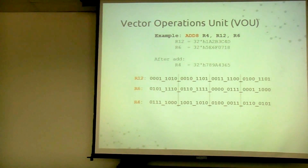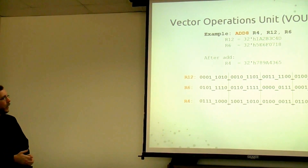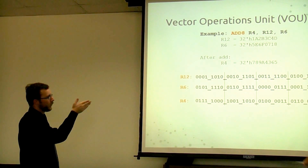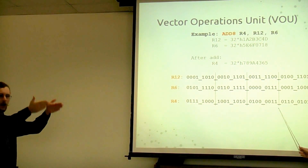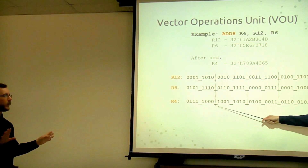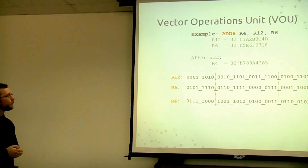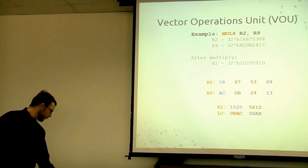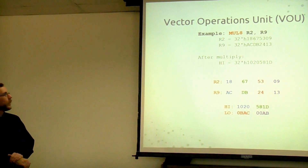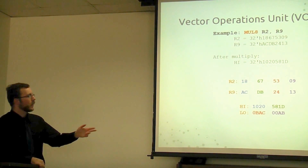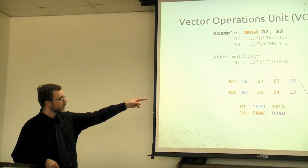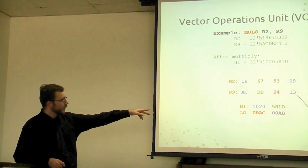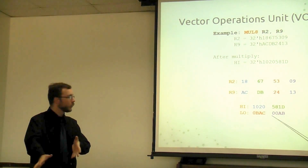Here's an example with a Quad 8 add — in binary you can see the lanes separated, and it's done on one group so carries are completely ignored at this point. Multiply works the same way — for example, the purple lane: 0x09 times 0x13 gives 0x008B, packed with the low. The blue lane: 0x18 times 0xAC gives 0x1020, which goes on the upper.